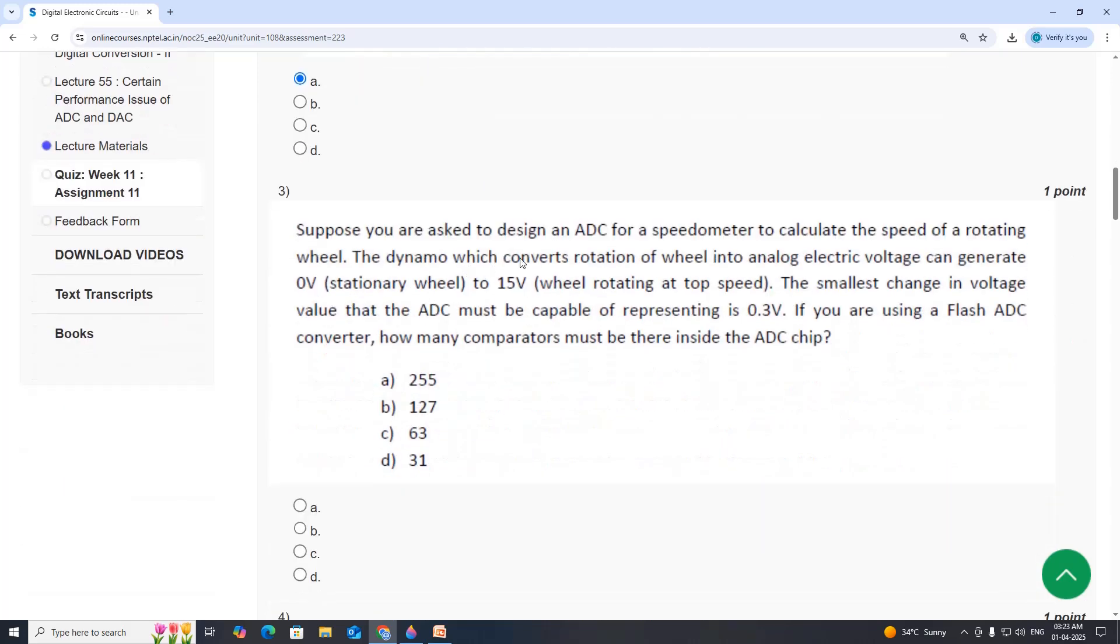Suppose you are asked to design an ADC for a speedometer to measure speed of rotating wheel. The dynamo which converts rotation of wheel into analog electric voltage can generate 0 to maximum 15V, and the smallest change in the value that ADC must be capable of representing is 0.3V.